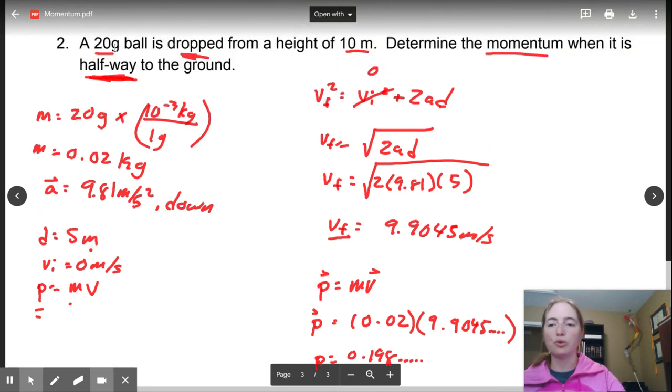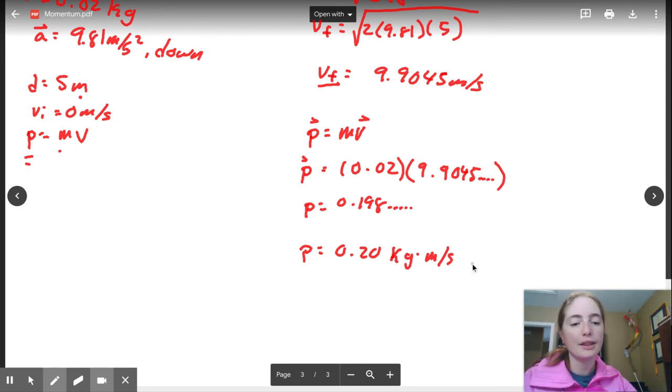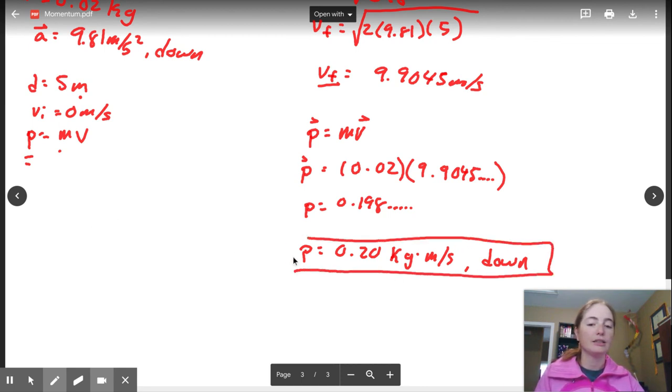Let's start with sig digs. We've got 20 grams and 10 meters. So that's two sig digs. So I am going to put 0.20 kilograms meter per second. And I said momentum. Momentum is a vector. So that means I must have direction. I determined that positive is going to mean down. So therefore, I need to communicate down.